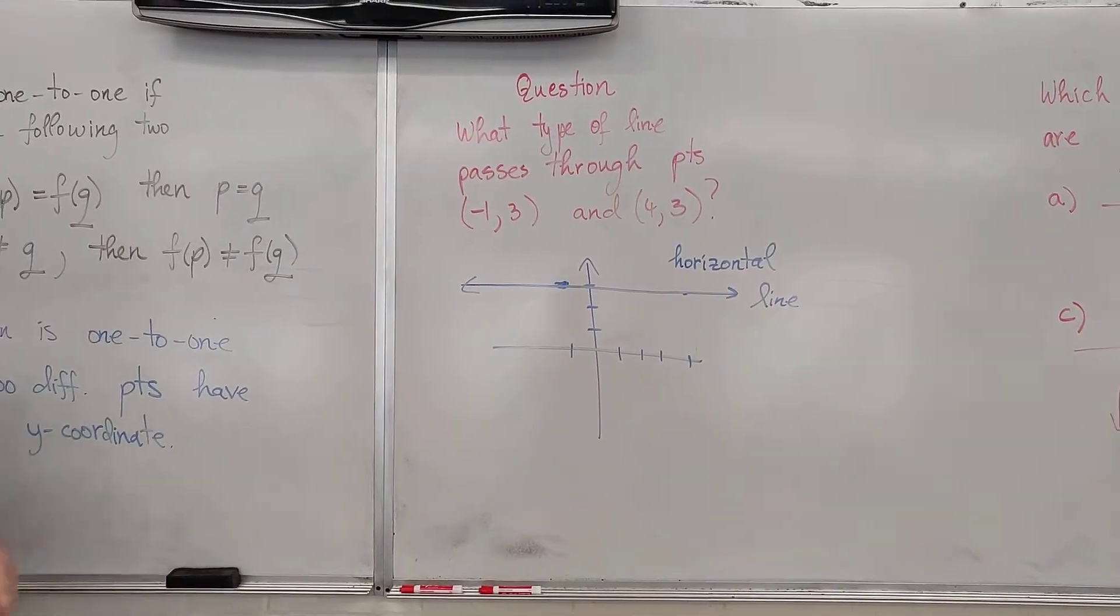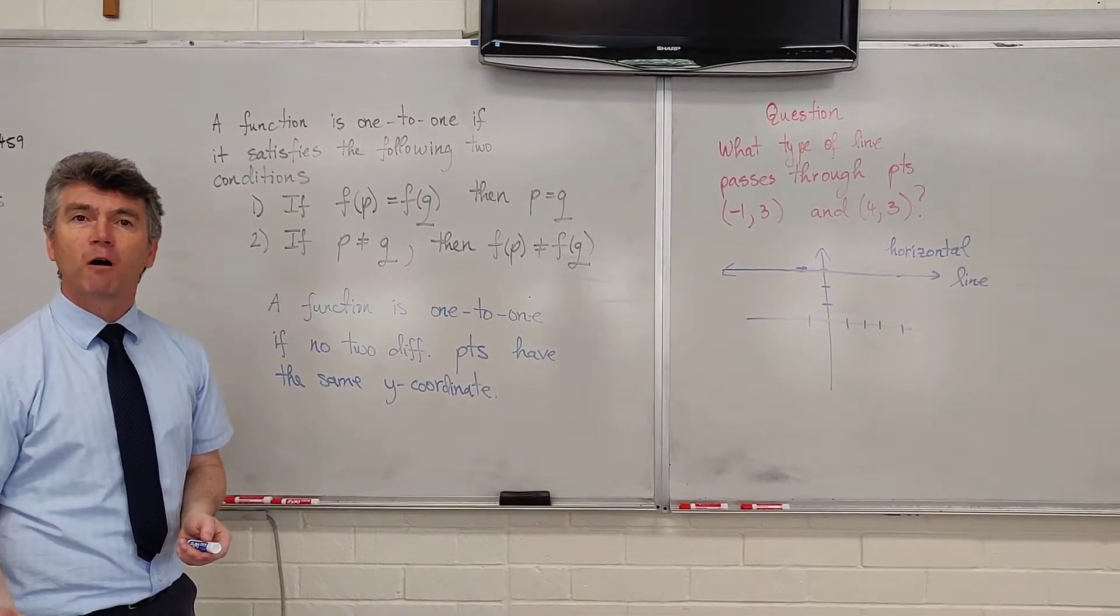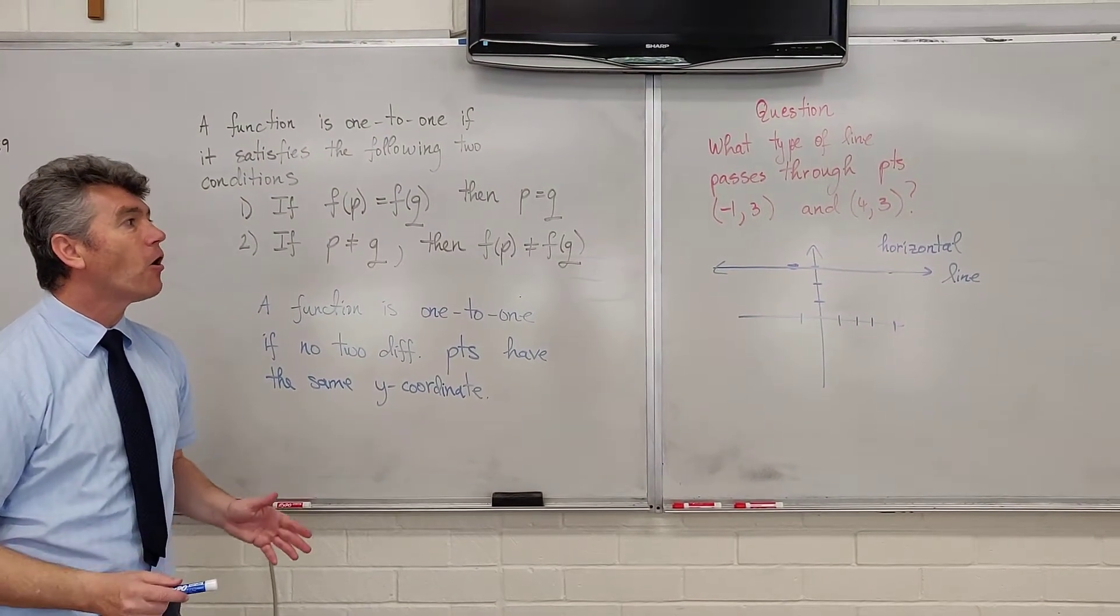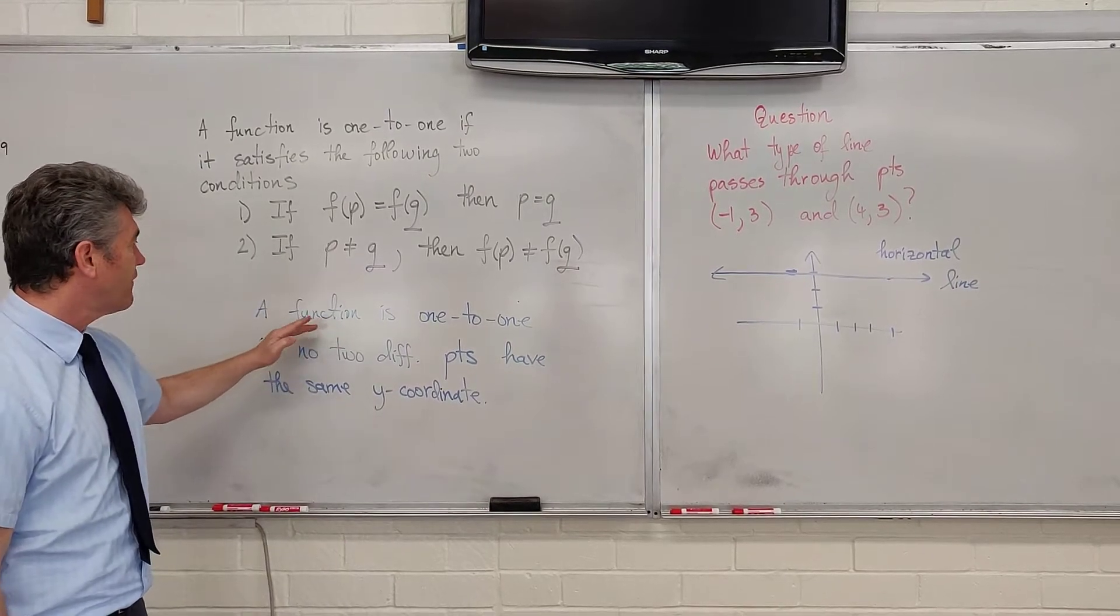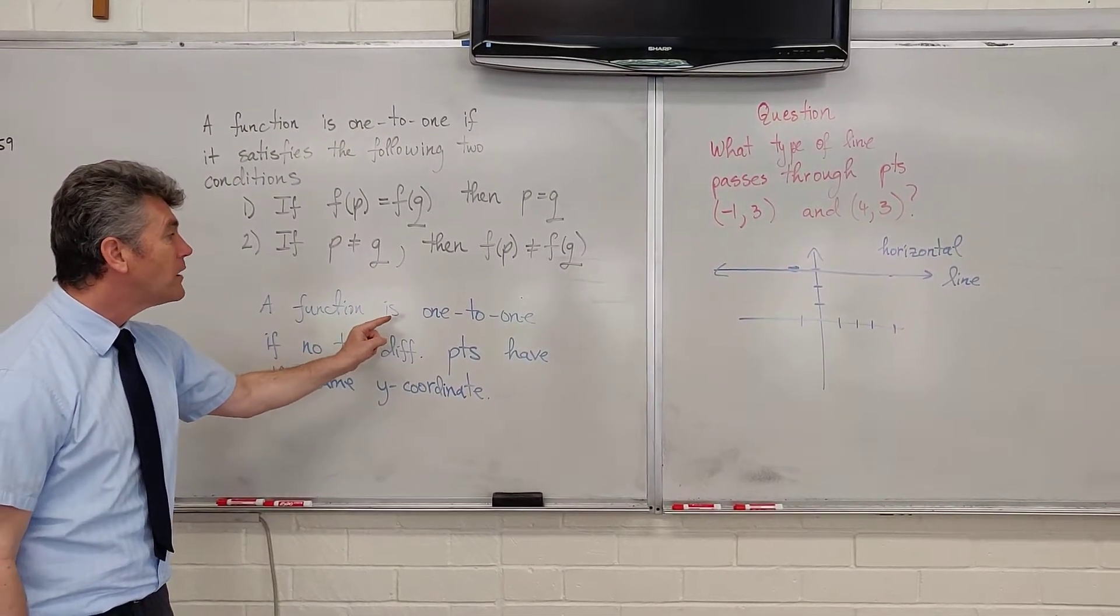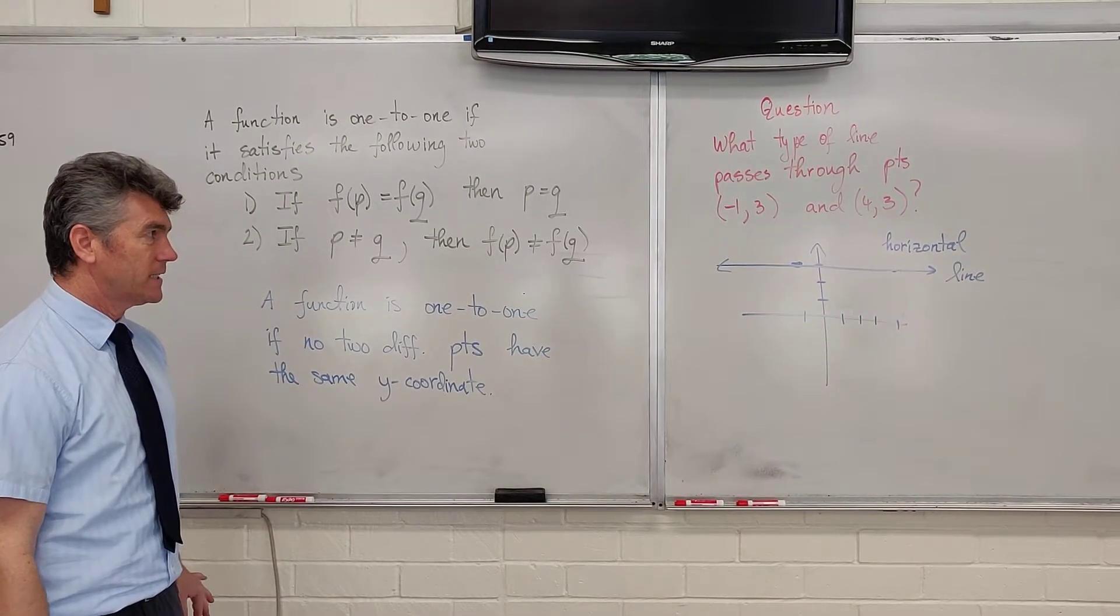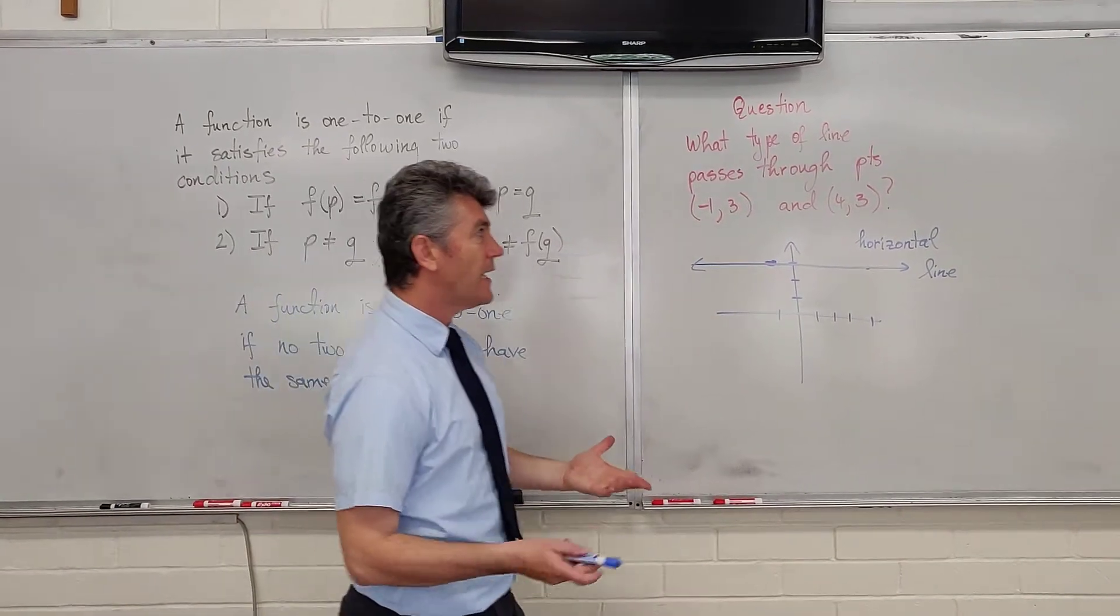Mathematicians have devised a test to be able to tell whether a function is one-to-one or not one-to-one. It is called the horizontal line test. It goes back to the same definition: a function is one-to-one if no two different points have the same y-coordinate.